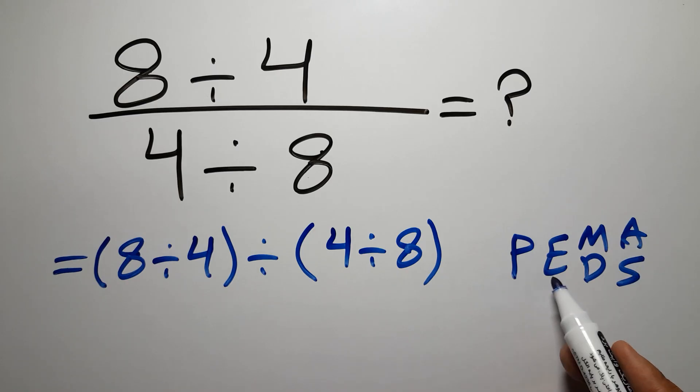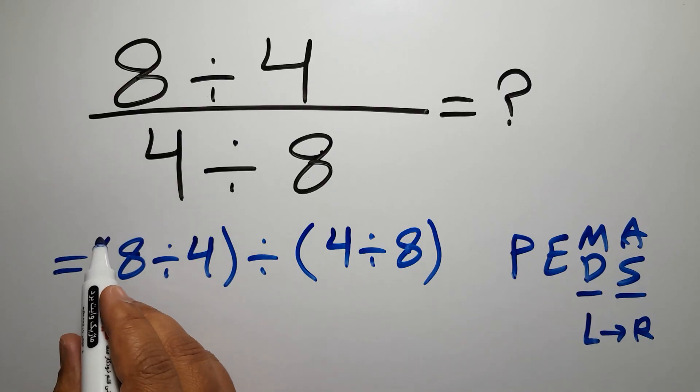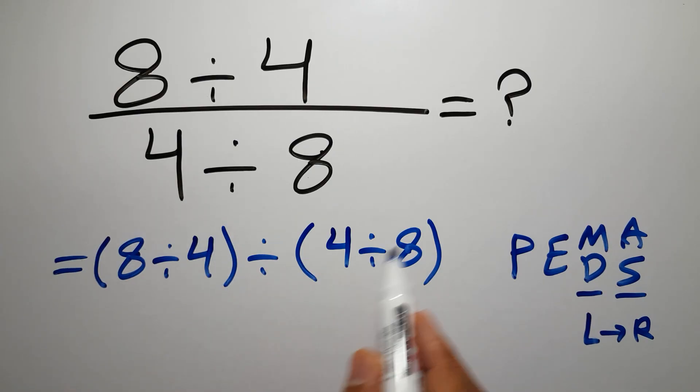First, we have to do parentheses, then exponents, then multiplication or division, and finally addition or subtraction. Remember that multiplication and division have equal priority and we have to work from left to right. And the same applies to addition and subtraction. So here, first we have to do these parentheses.